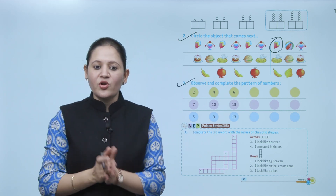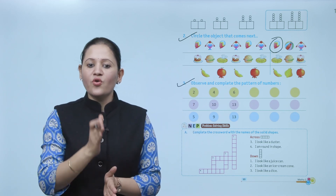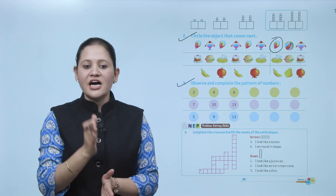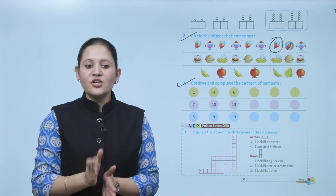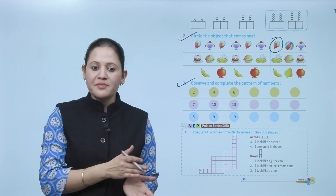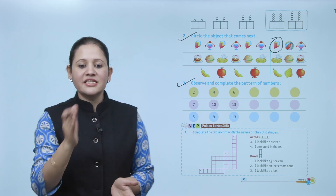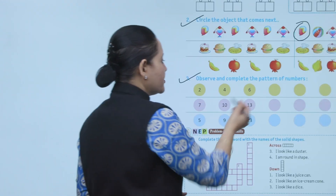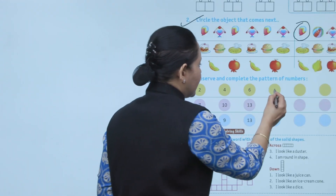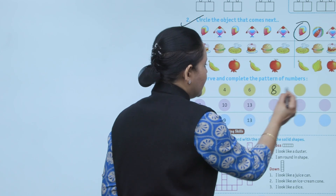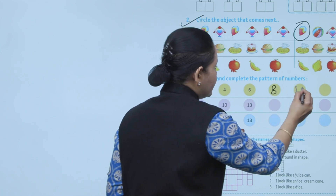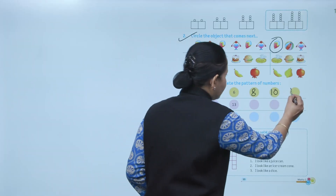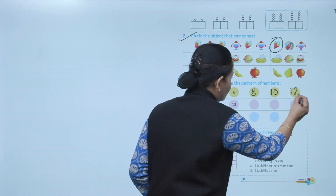Next: observe and complete the pattern of numbers. Pattern: 2, 4, 6 — every time we add 2 to the previous number to get the next number. Add 2 to 6 to get 8, then 10, then 12.